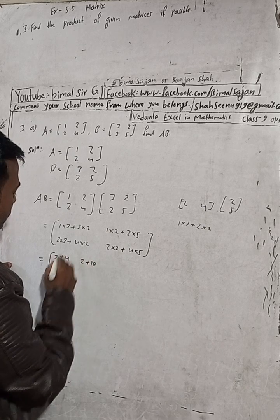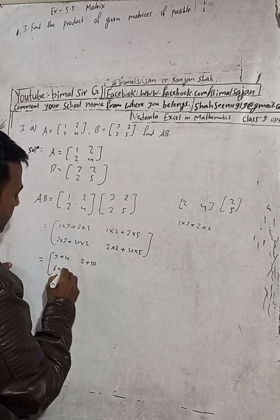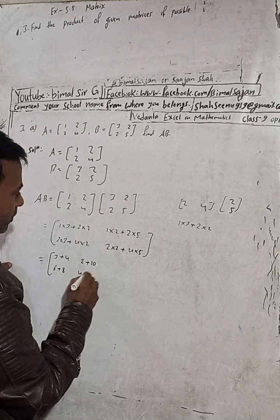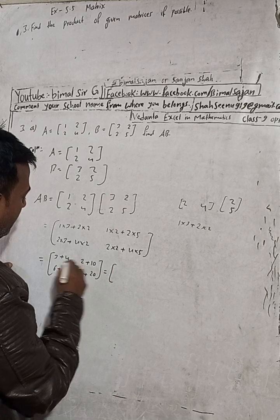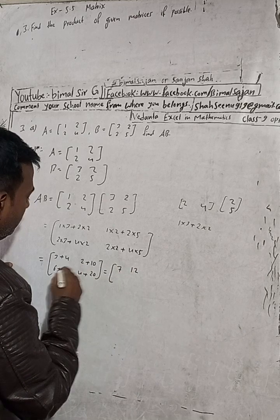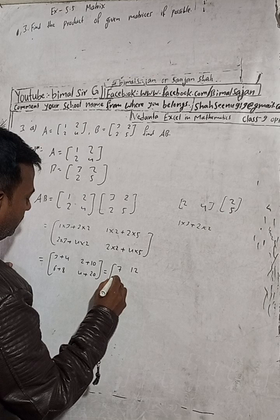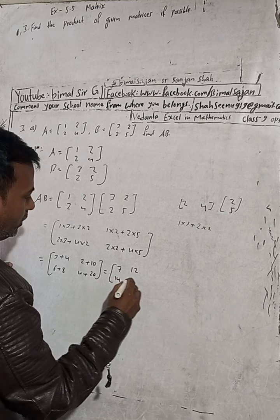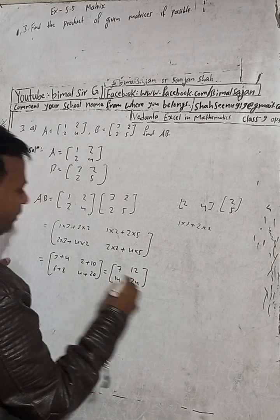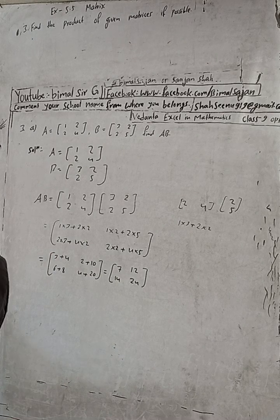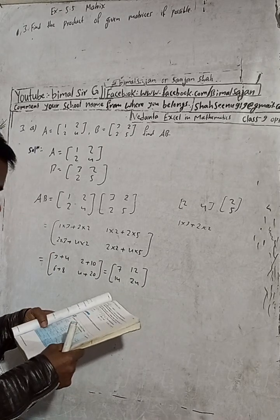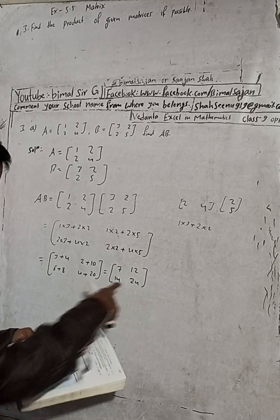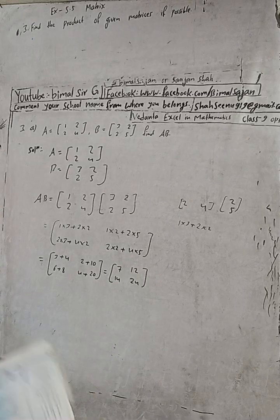Computing: 3 plus 4 equals 7, 2 plus 10 equals 12, 6 plus 8 equals 14, and 4 plus 20 equals 24. So this is our required answer: 7, 12, 14, and 24. This is the solution.